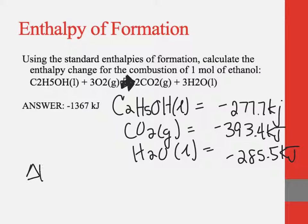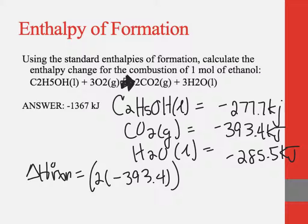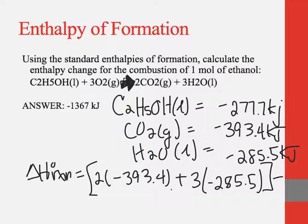So they want the combustion for 1 mole of ethanol. Products minus reactants, my delta H of the reaction is going to be equal to 2 times the CO2, which is negative 393.4, plus our water, 3 times negative 285.5. And then we have to subtract from that the ethanol, which is negative 277.7. And when I do the math on that, I get negative 1366.5. So they rounded their answer.